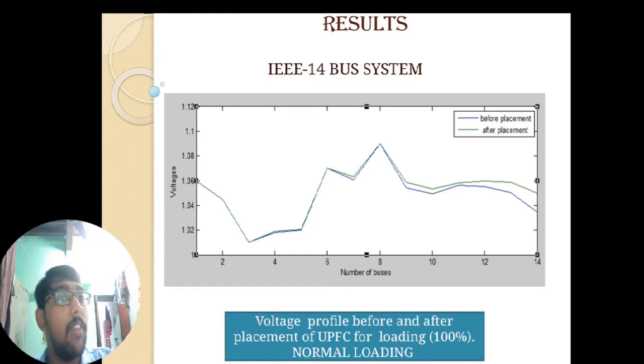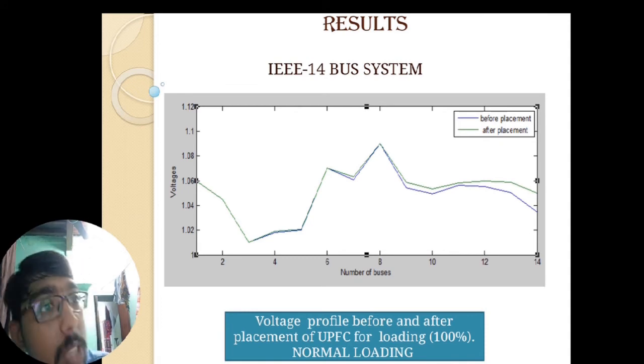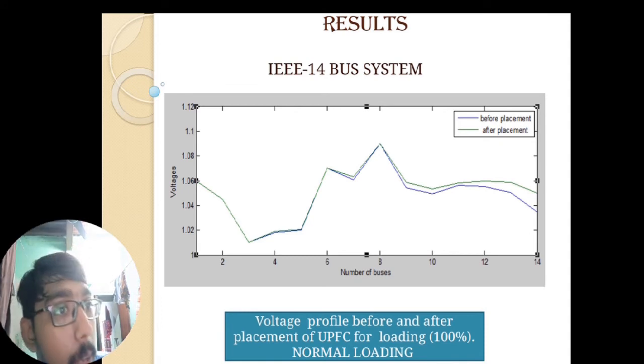As you see, while I was placing UPFC in 14 bus system, there is clearly a voltage profile improvement. The violet line indicates before placement of UPFC and the green line indicates after placement of UPFC. When I placed UPFC, the voltage profile improved.